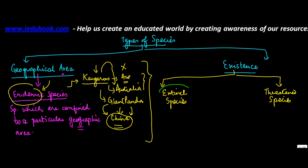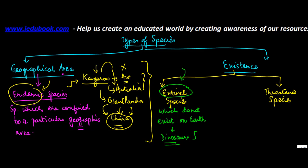Extinct species — what does extinct mean? Extinct means something which is finished, something which is gone. Extinct species are the ones which do not exist on earth anymore. You must have heard of dinosaurs — all those Jurassic Park movies exist only as movies because dinosaurs do not exist anymore. As a species, the dinosaur is extinct, meaning there are no more dinosaurs on earth.